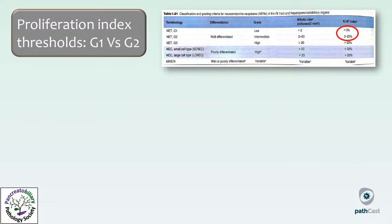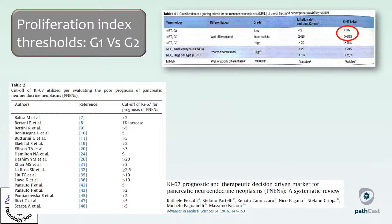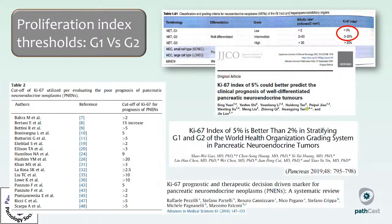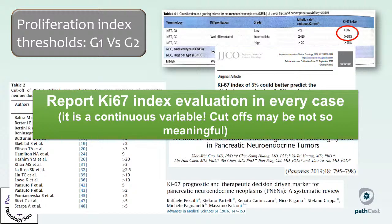There is an active debate about the thresholds separating G1 versus G2 NETs. In the WHO classification, 3% for Ki67 proliferation index has been maintained as the valid threshold. However, many papers propose other thresholds, and 5% seems a better cutoff for separating low-grade from intermediate-grade NETs in some studies. It may be advisable to report the actual proliferation index for each case, so that the oncologist may use it as a continuous variable to optimize therapeutic management case by case.